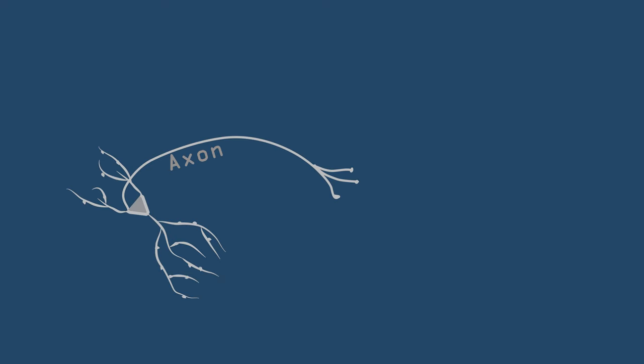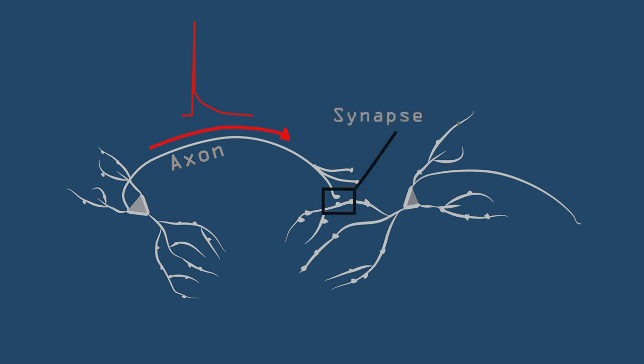A neuron sends an action potential along its axon, causing it to release a neurotransmitter, which the other neuron receives at the synapse, the connection between them.